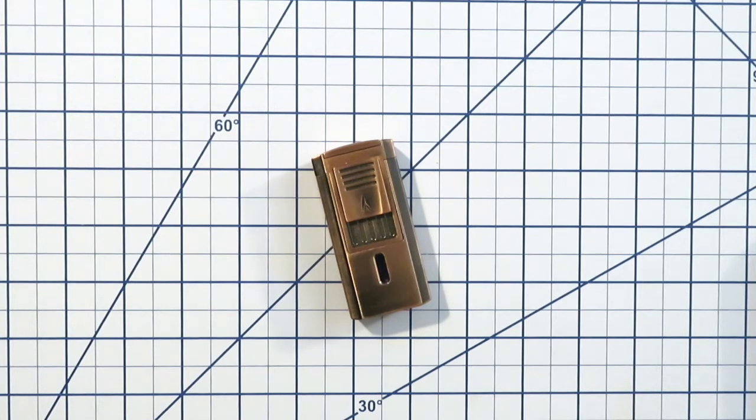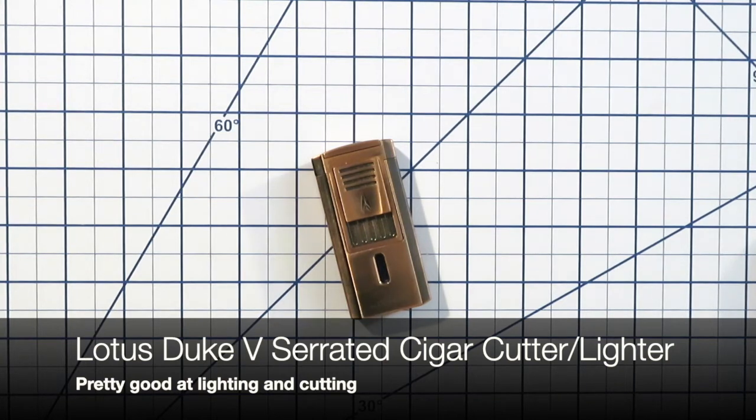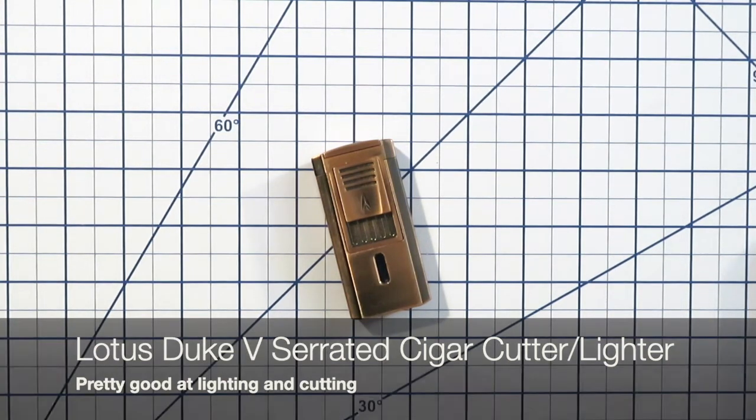Welcome everybody to the Intermission Gentleman here and today I'm gonna do a review on a cigar lighter and cutter combination here. This is the Lotus Duke V serrated cigar cutter and lighter.